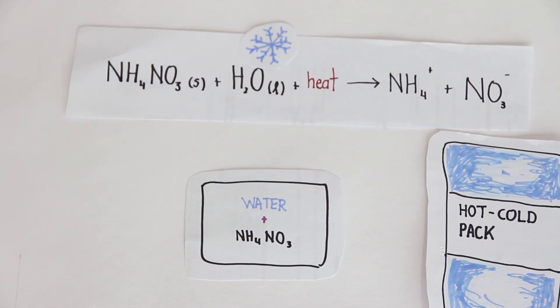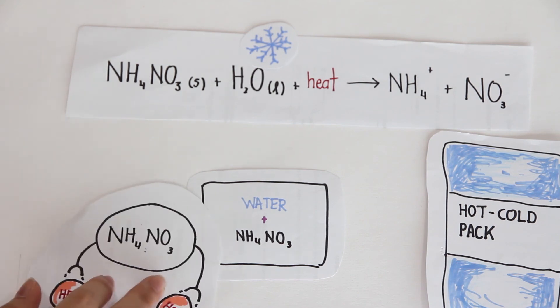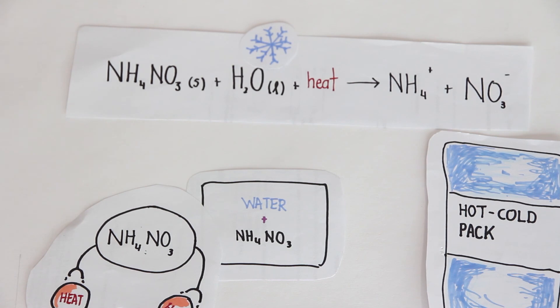In cold packs, the chemical ammonium nitrate is often used because it absorbs a lot of heat energy when it dissolves in water. In other words, ammonium nitrate dissolves in water endothermically and the cold pack can go down to a temperature as low as zero degrees Celsius.